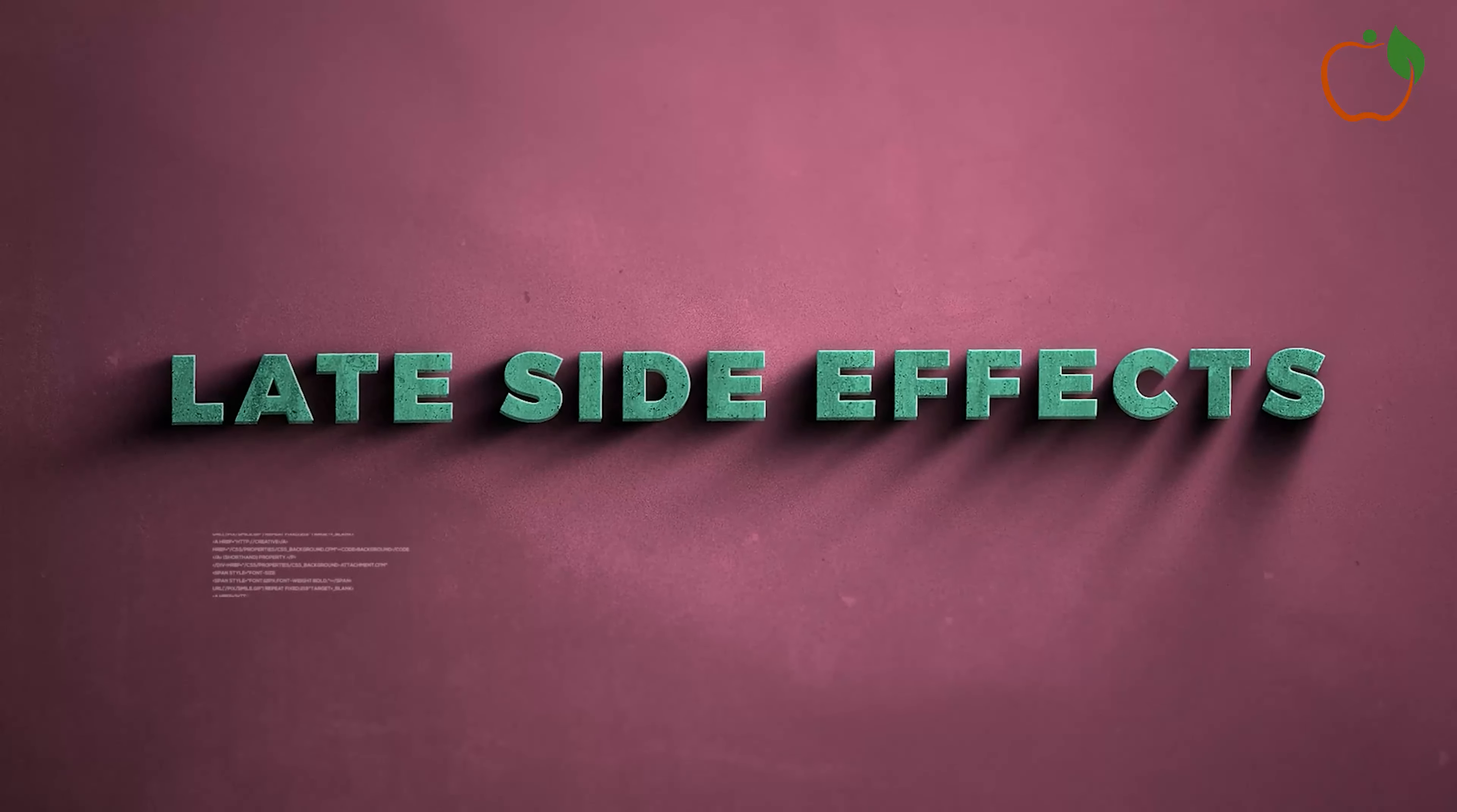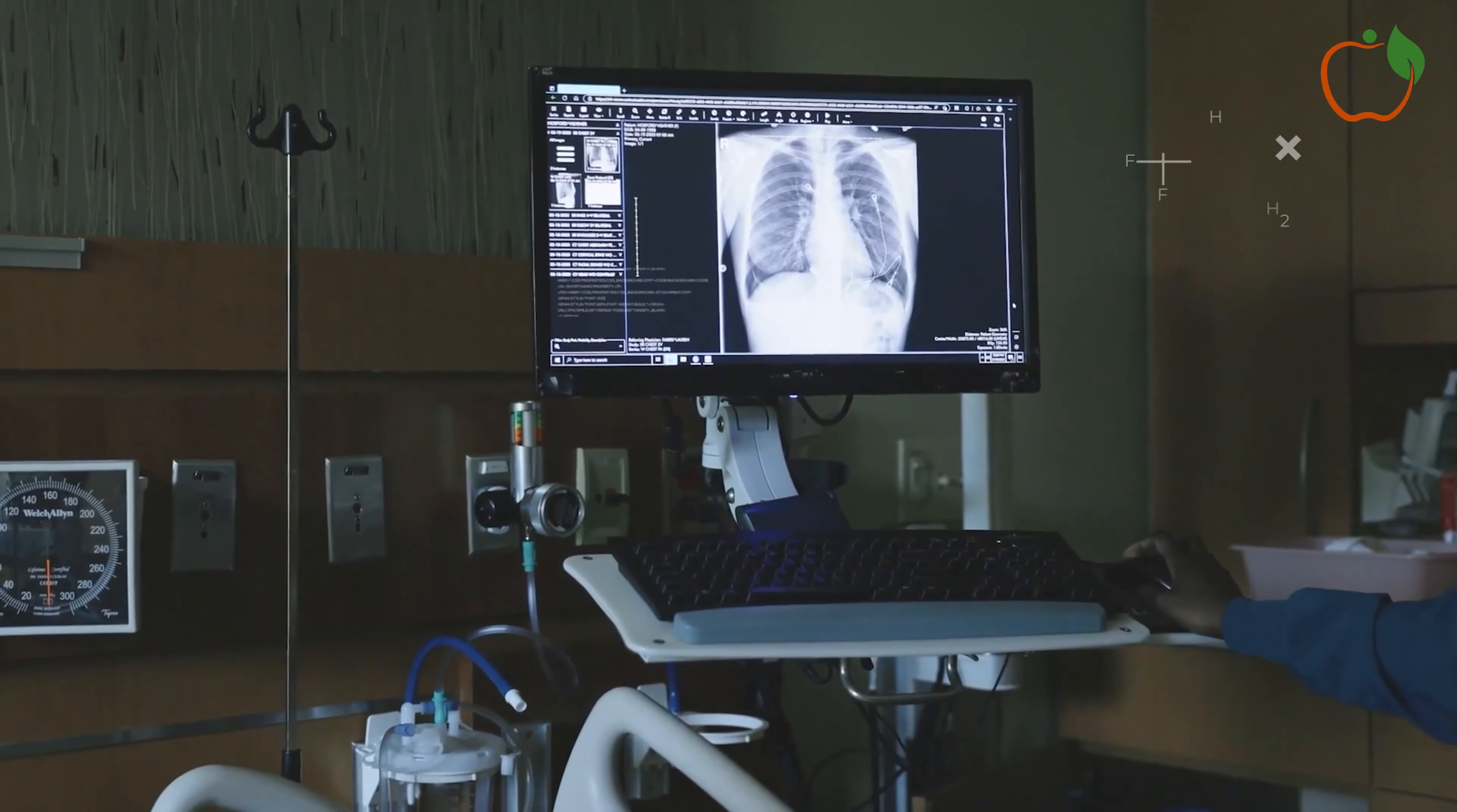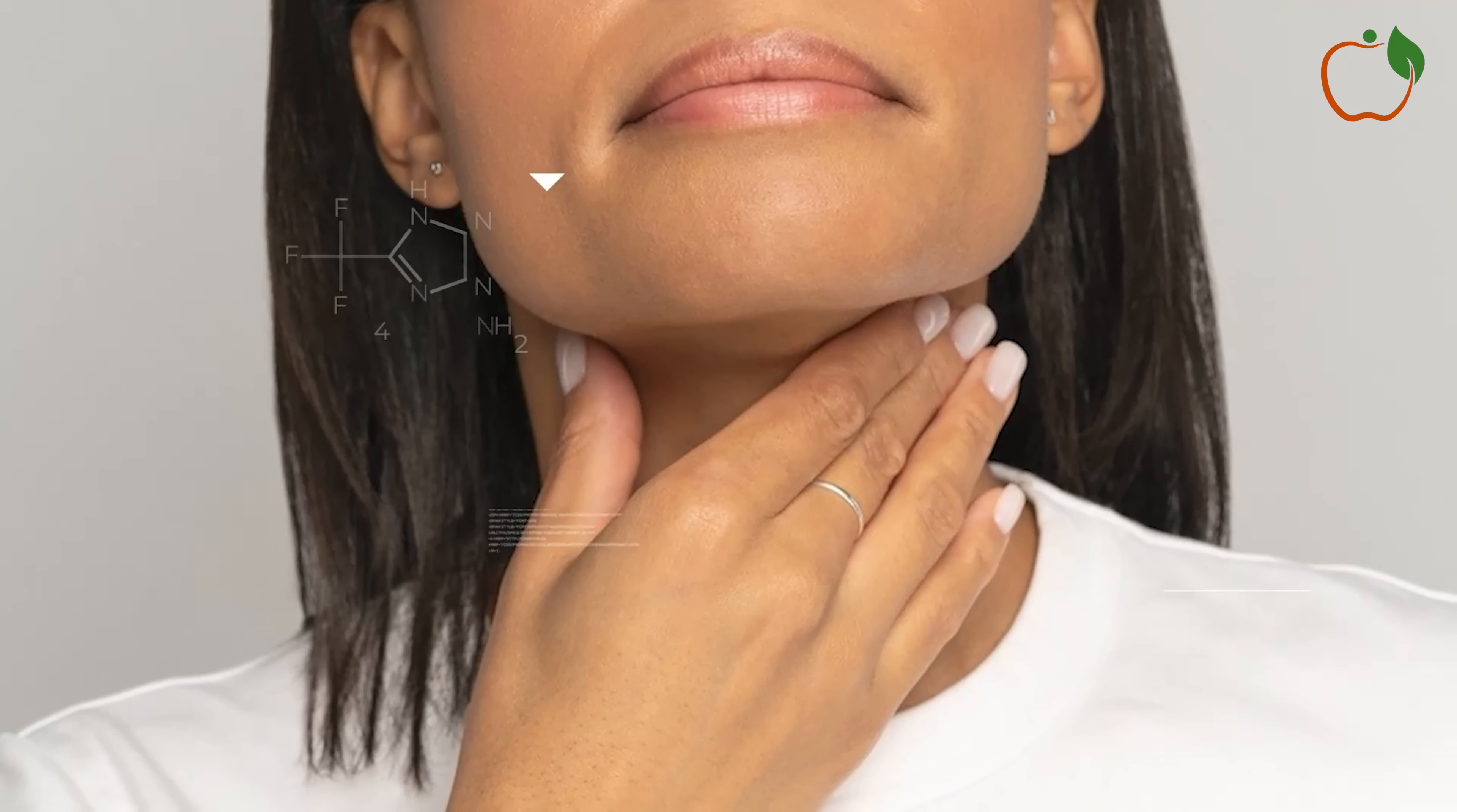Late side effects emerge anywhere from six months to many years after radiation treatment ends. Because radiation causes permanent changes to tissue cells over time, late effects may gradually develop months or years later even if acute effects were minimal. Examples of late side effects by body area include head and neck area: dry mouth xerostomia from saliva gland damage, difficulty swallowing, stiffness in neck and jaw tissues.